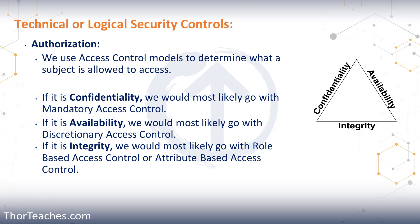This is a good point to tie this back to the basics of all IS, IT and cybersecurity — the CIA triad. If confidentiality is more important than everything else, we would most likely use mandatory access control. If availability was more important, we would likely go with discretionary access control. And if integrity is most important, then we would either choose RBAC role-based access control or ABAC attribute-based access control.